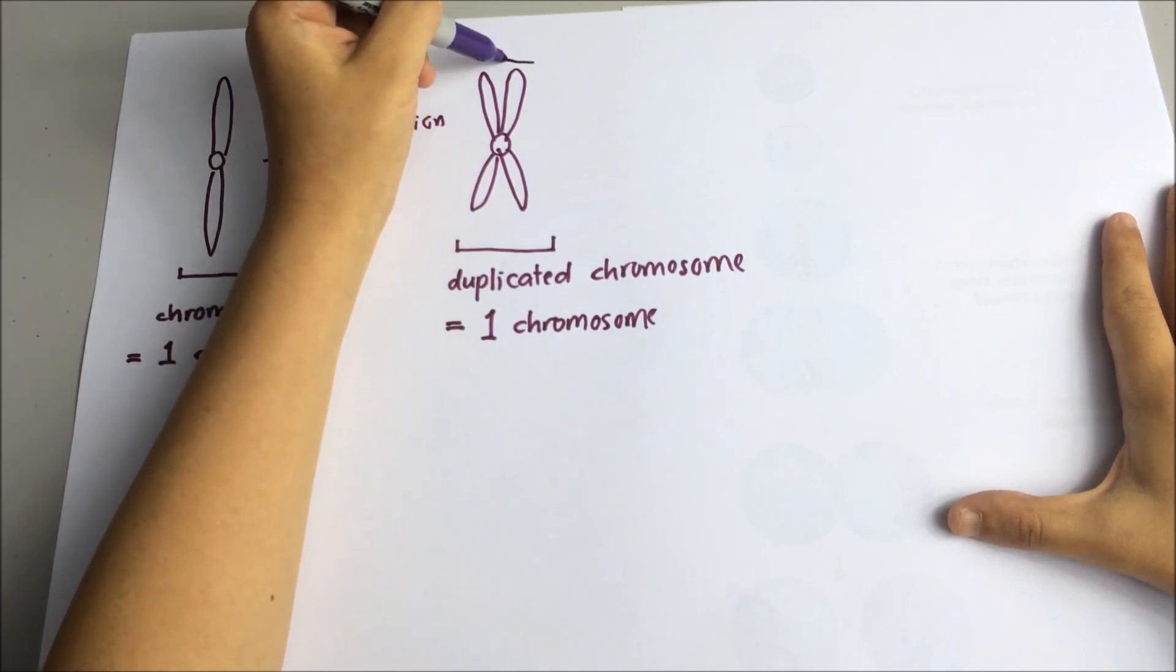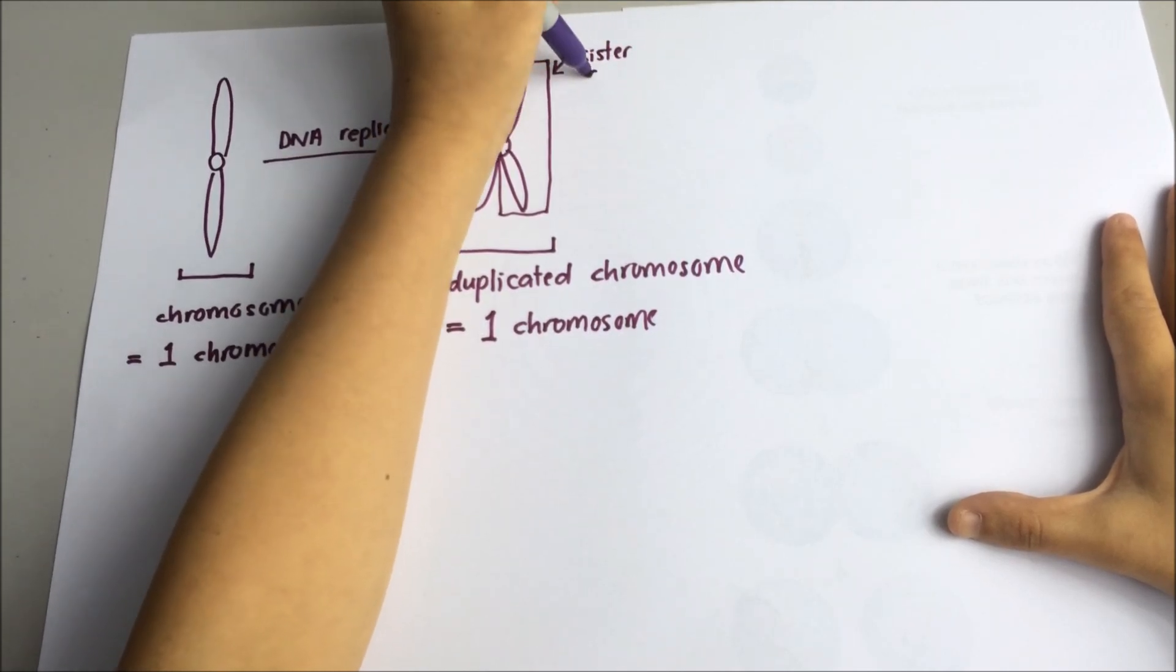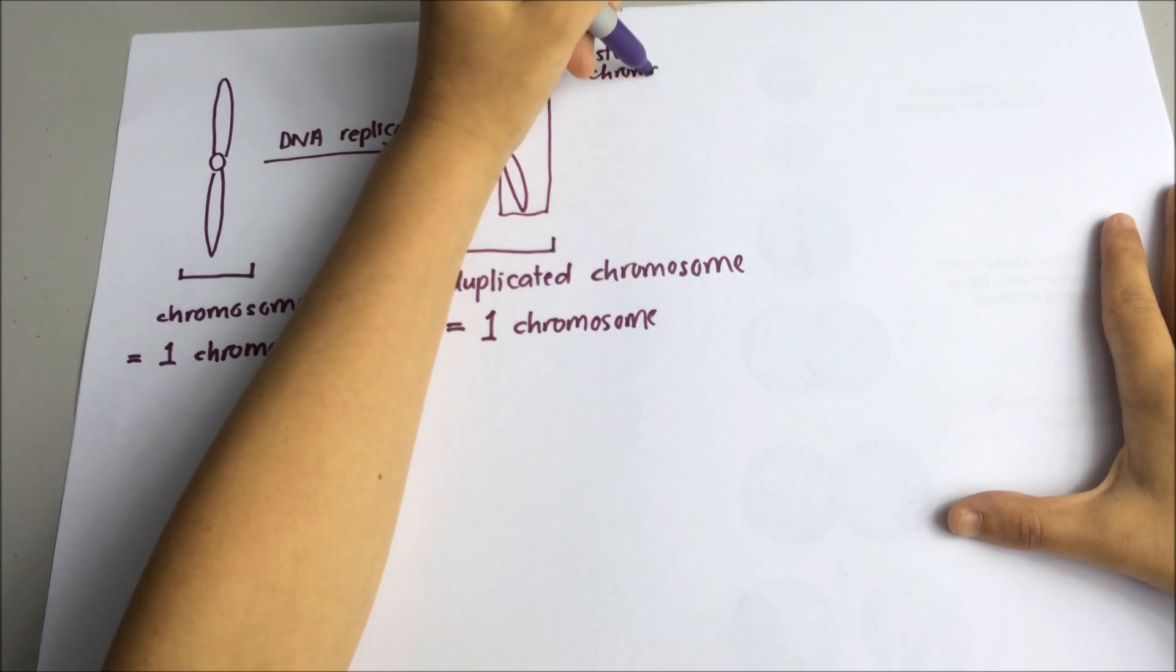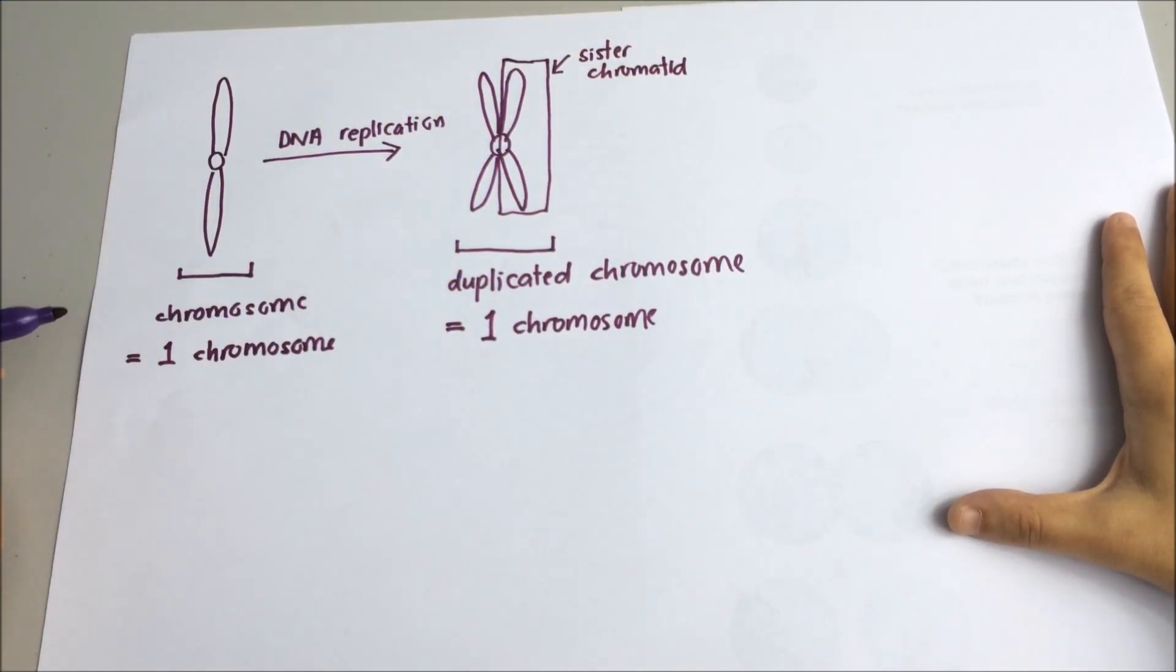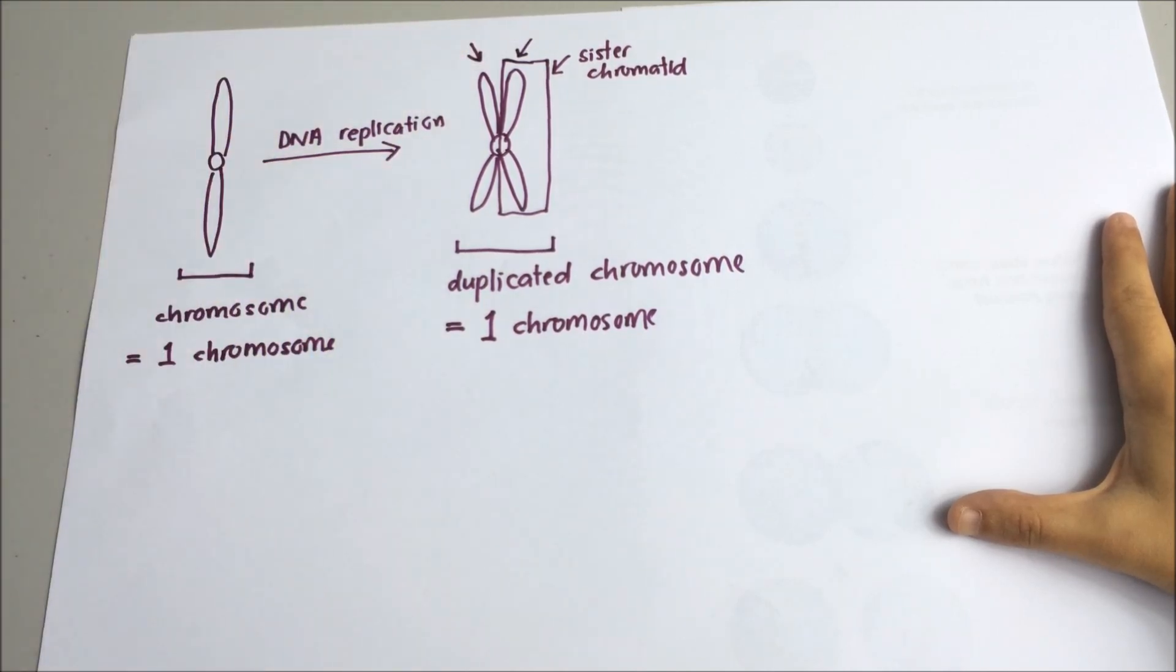So this is one sister chromatid. You can see that after duplication, it has become two sister chromatids in one chromosome.